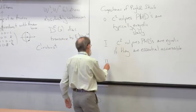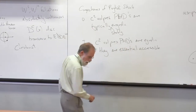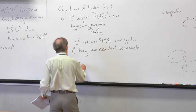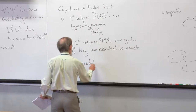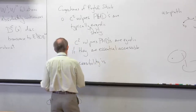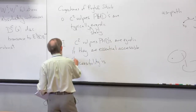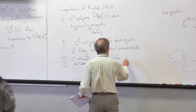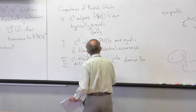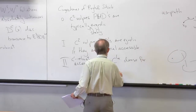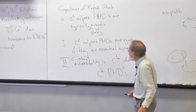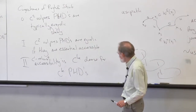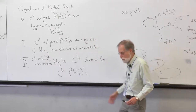That's one of their conjectures. The other one is that actual robust accessibility — C1 robust accessibility — is CK dense for CK partially hyperbolic diffeomorphisms. And if you put the two conjectures together, you would get conjecture zero.